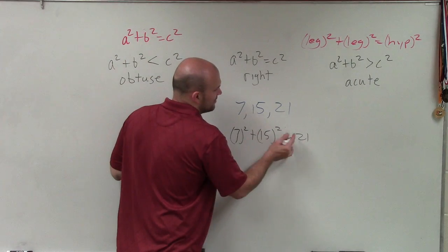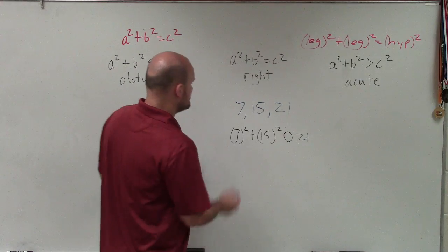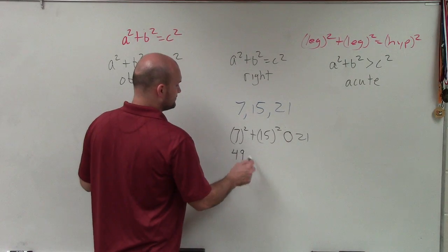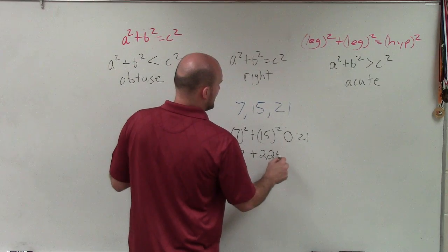And so maybe instead of writing all those, I'll just make a nice big circle where I'll insert what I'm going to do. So therefore, 7 squared is 49 plus 15 squared is 225.